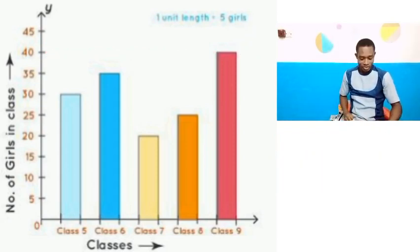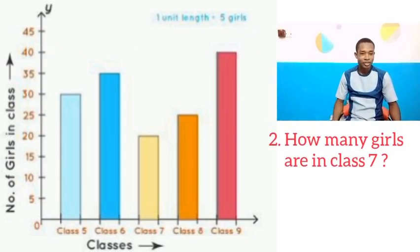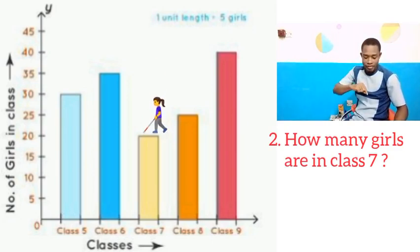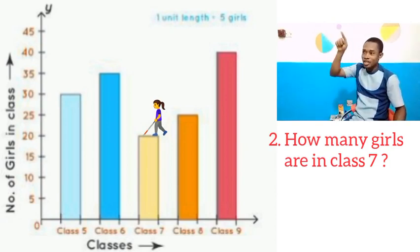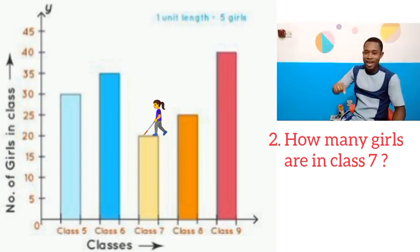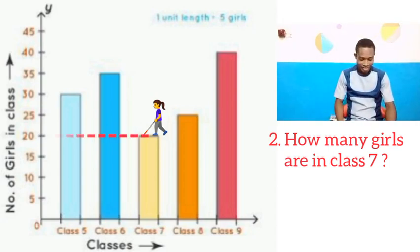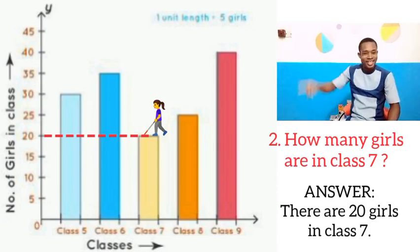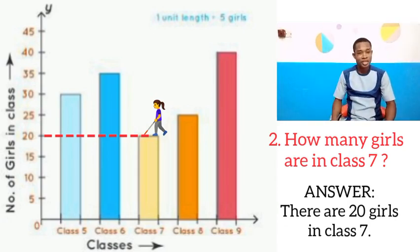Let us move on to question number 2: How many girls are in class 7? We are going to do the same thing — go to our bar chart and check the rectangular bar representing class 7. From the height, we take it to the Y axis. You will notice that in class 7, when the line was traced, it gave us 20 on the Y axis. So the number of girls in class 7 is 20.